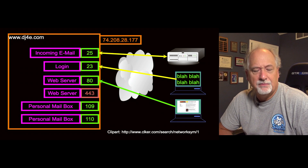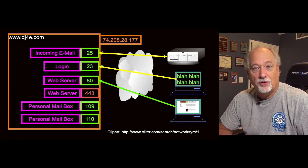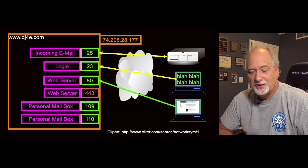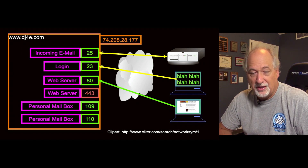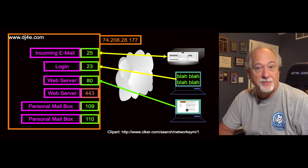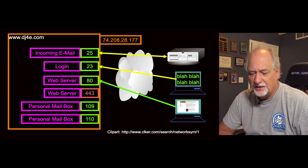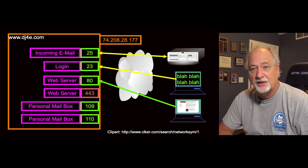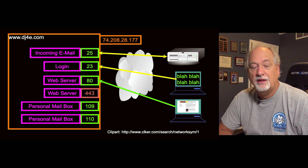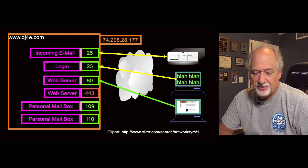You can look these things up: port 25 is used for email server-to-server communication. In the old days, we used Telnet on port 23. The client connects to an IP address — in this case, 74.208.28.177 is the IP address of this computer — and port 25 is the extension where one computer sends email to another computer.